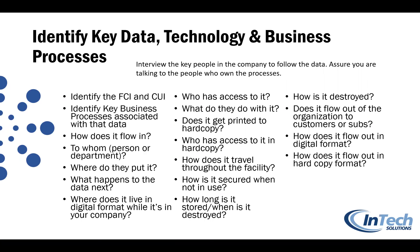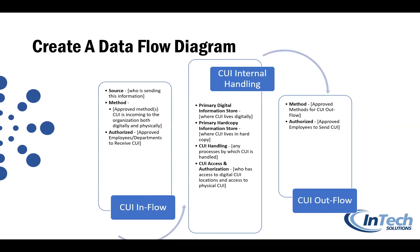Think about how CUI flows out of the organization — back to customers or to subcontractors — and make sure that flow is secured and compliant. If it flows out in hard copy or on physical media, who is authorized to send it? Then create a data flow diagram, a high-level visual showing how information travels. You cannot do an assessment and get a good POA&M until you complete this step.